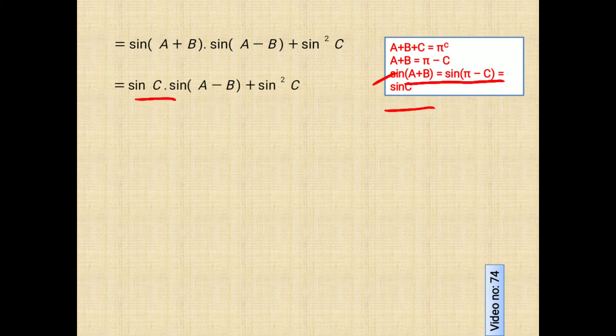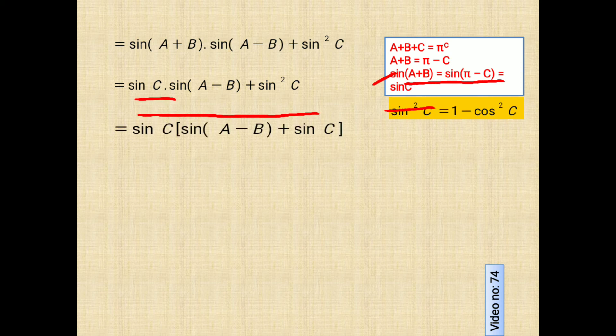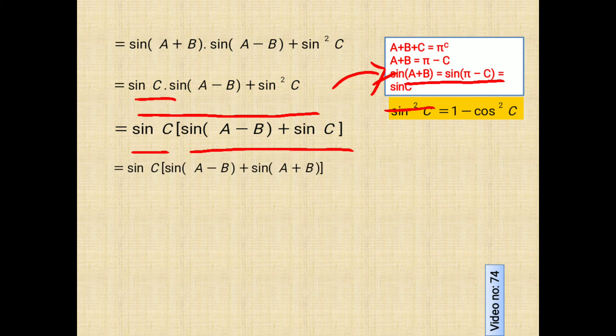It means we will replace sin A plus B by sin C in the next step, and then we'll take sin C common from both of these parts. Doing this, bracket will have sin A minus B plus sin C, and this sin C is common that we have taken. Again, sin C, then reversing the process from this line above, sin C can be written as sin A plus B, so that's what we will do here. We'll write sin A plus B in place of sin C following the cast rule.